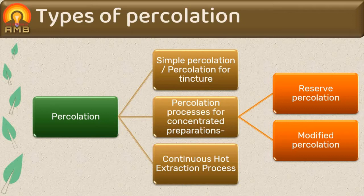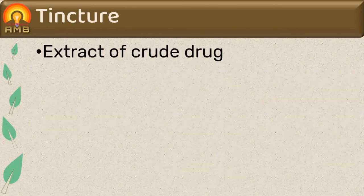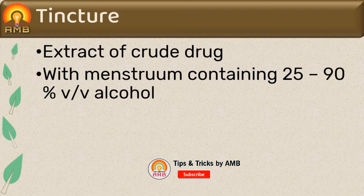In this presentation we will discuss simple percolation, or percolation for tinctures. Tinctures are extracts of crude drugs from plant or animal origin which are extracted with menstruum containing 25% to 90% volume by volume of alcohol. Tinctures are somewhat less concentrated preparations.